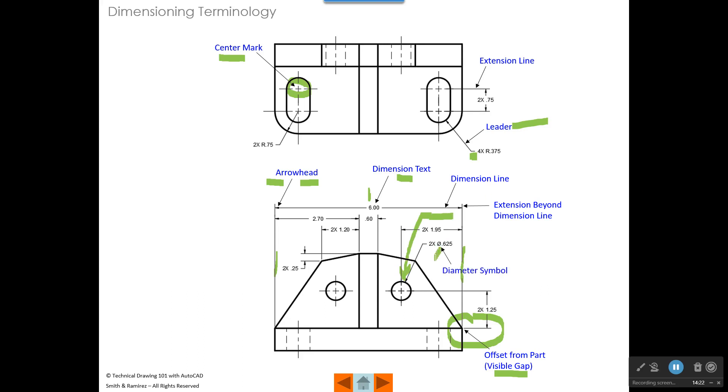Here is a diameter symbol. If something is a hole, we want to make sure we have the diameter symbol in there and the R over here on this side represents a radius symbol. The times symbol that we see right here, which is an X, if we look at this note right here, it says two times R.75. The reason why it says two times is there's a radius on this side and there's a radius on this side. And this dimension right here and this leader actually dimensions both of those. And that's why we need to say two times. Over here, we have a four times R.375. That's because we have a radius of 0.375 there, there on this side over here and on this side over here. So we are going to say four times R.375.